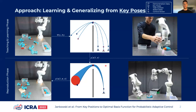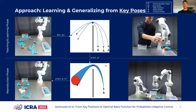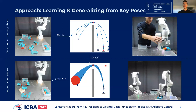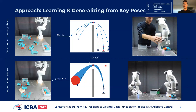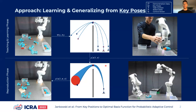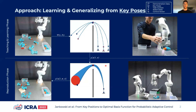This shows clear advantages over learning from full trajectories, even in dynamic scenarios that demand robot agility, as can be seen in this video. In the following, I will highlight the two technical contributions that enable learning from key poses.